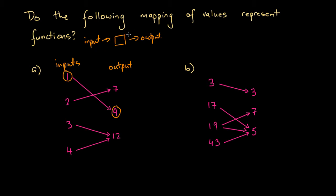Alternatively, if for a single input we get two different outputs, then that is not a function. A fundamental rule of a function is that if you give it an input, it must only give out one output, not two or more.